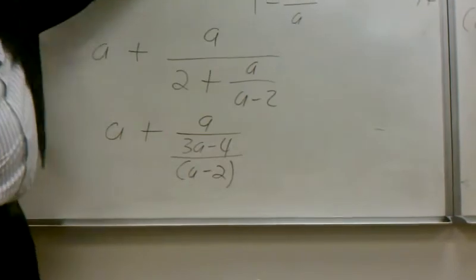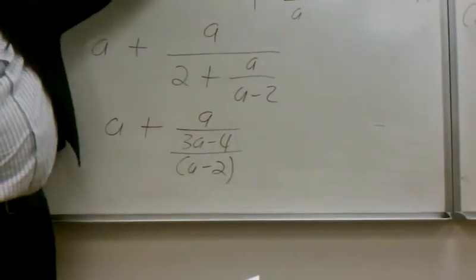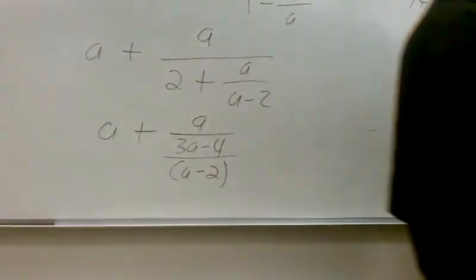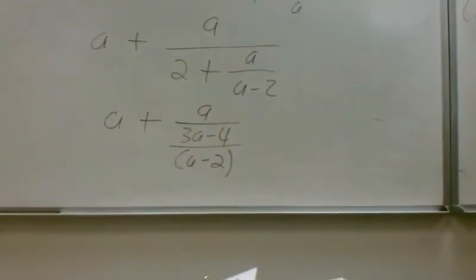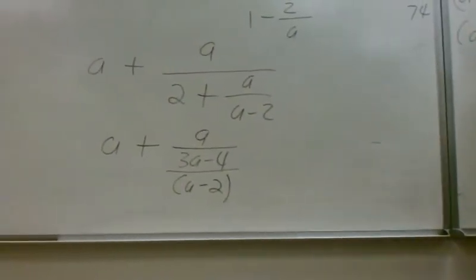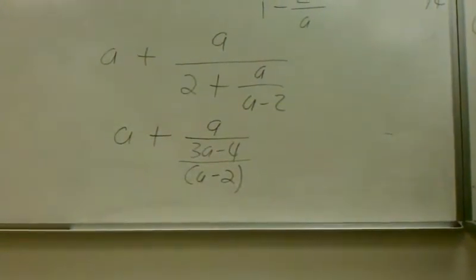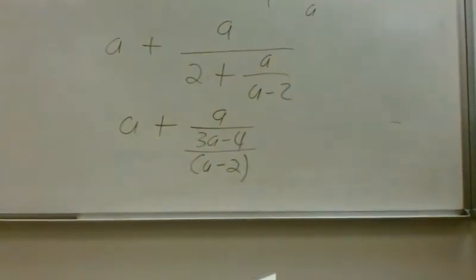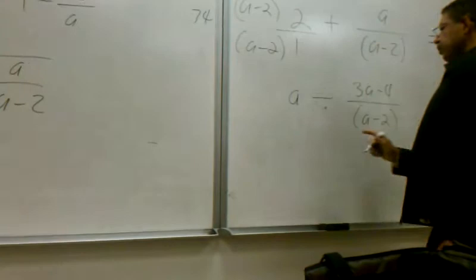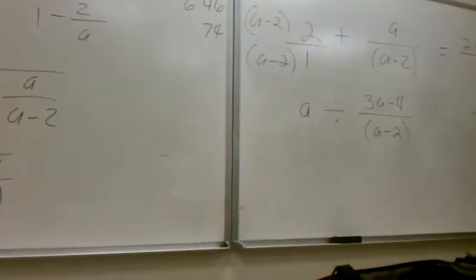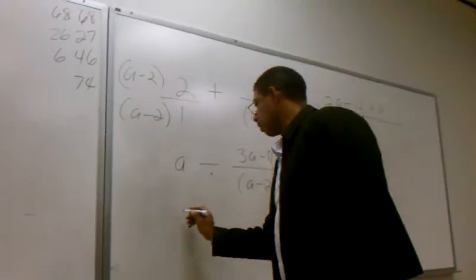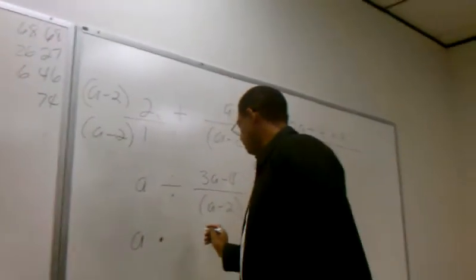Now we're going to go to step 3 — we're going to include the a now. We've got 2 more steps and we're done. So now we're going to take a and divide it by 3a minus 4 over a minus 2. What do I do when I take something and divide it by something else? Flip it — do the reciprocal.